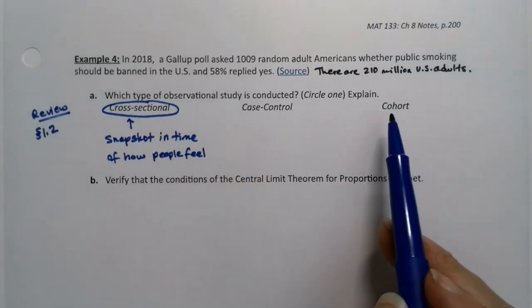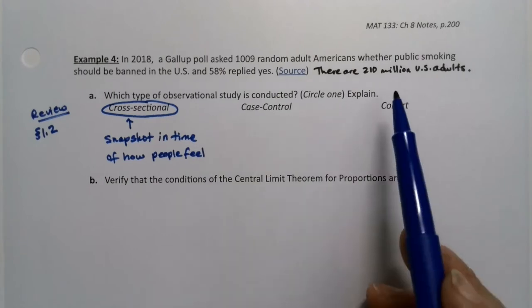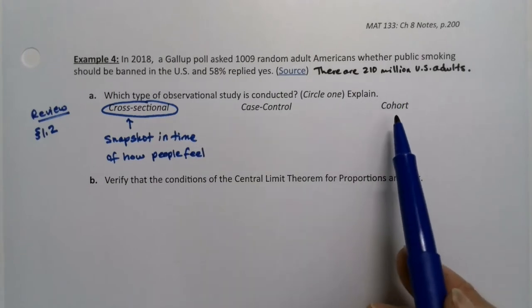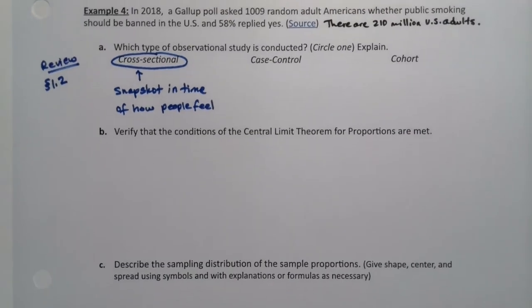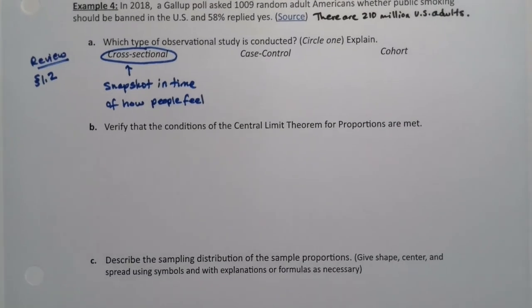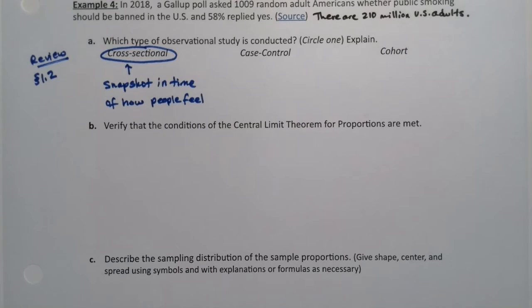And cohort would mean, of course, we follow a group of Americans around for 30 years, which is not what we're doing either. Well, it doesn't have to be 30 years. I mean, you could do it for two years or something. All right, so next, let's verify that the conditions of the central limit theorem for proportions are met. There's three big conditions.